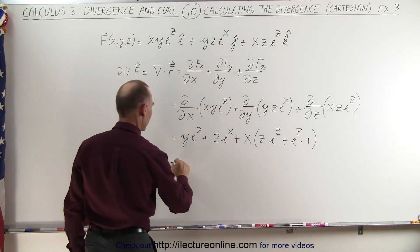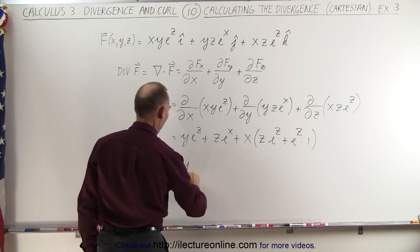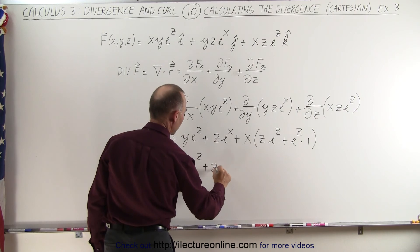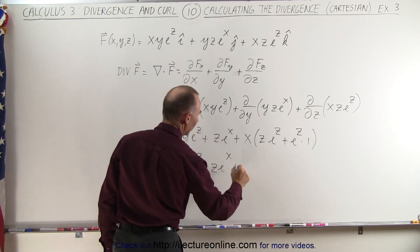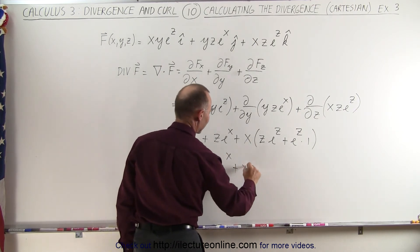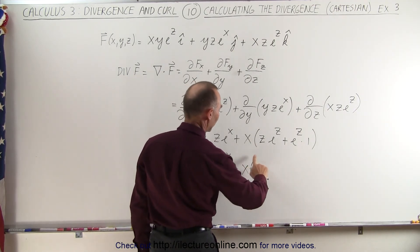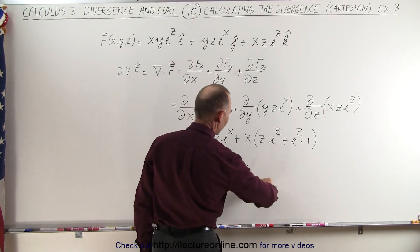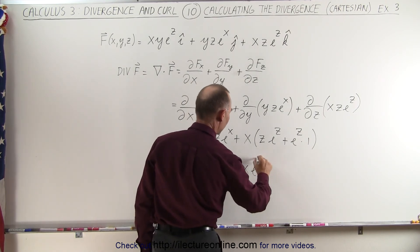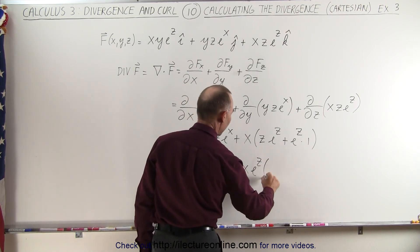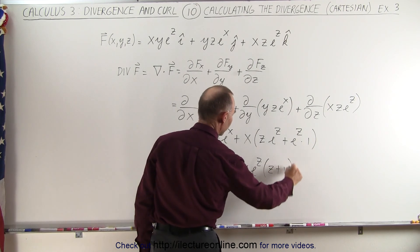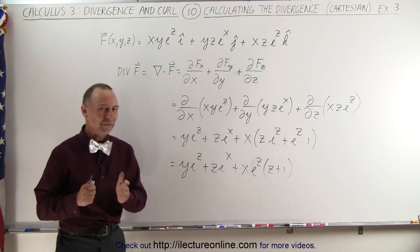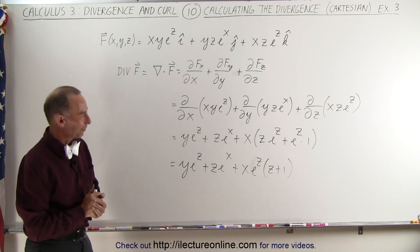So this becomes equal to y·e^z plus z·e^x, plus x times — and of course we can factor out an e^z — so x·e^z·(z + 1). And that would then be the divergence of this particular vector field.